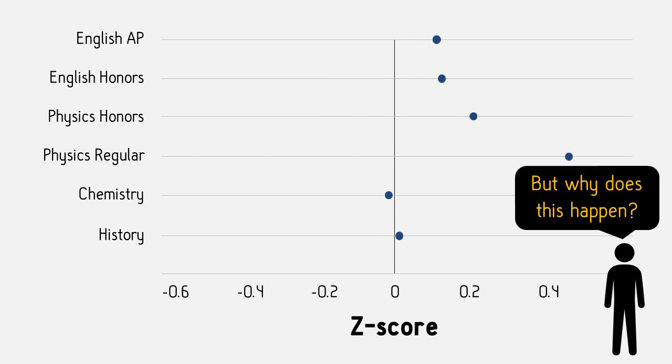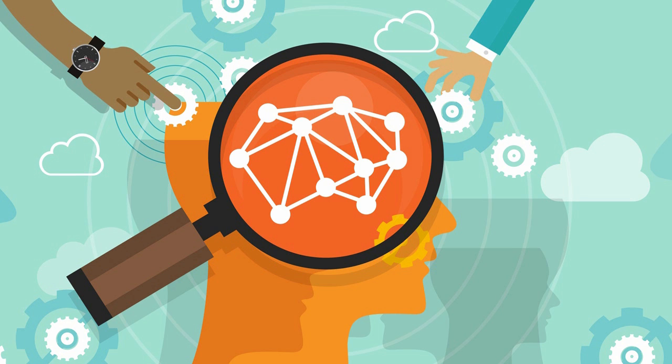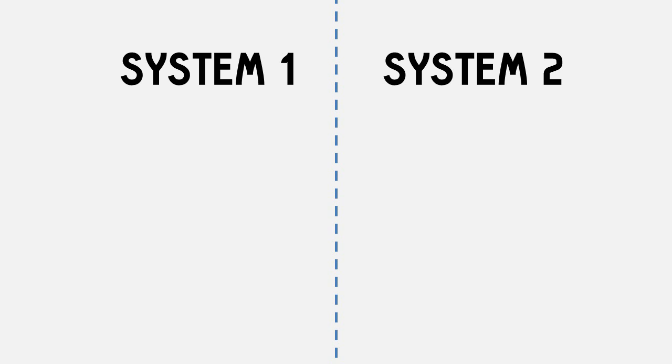So, why does this happen? Well, this effect reveals an interesting fact about how our brains process information. You may have heard that we have two distinct patterns of thinking, System 1 and System 2.